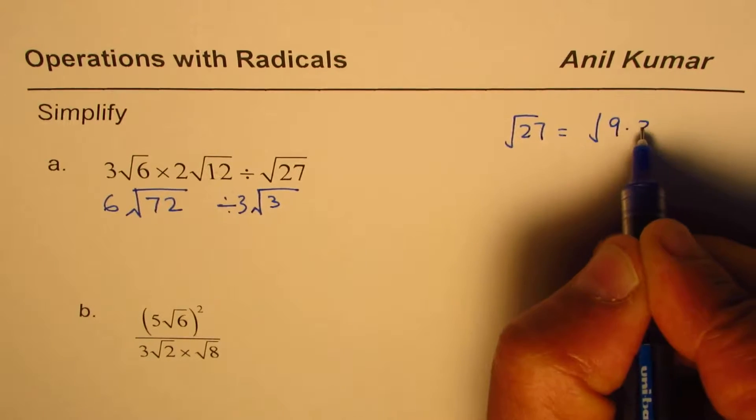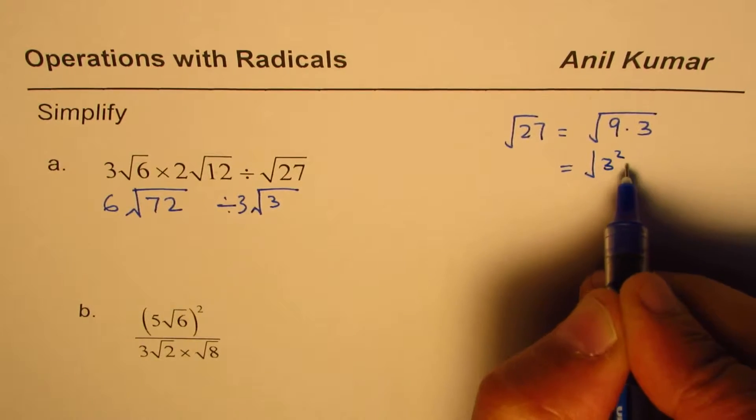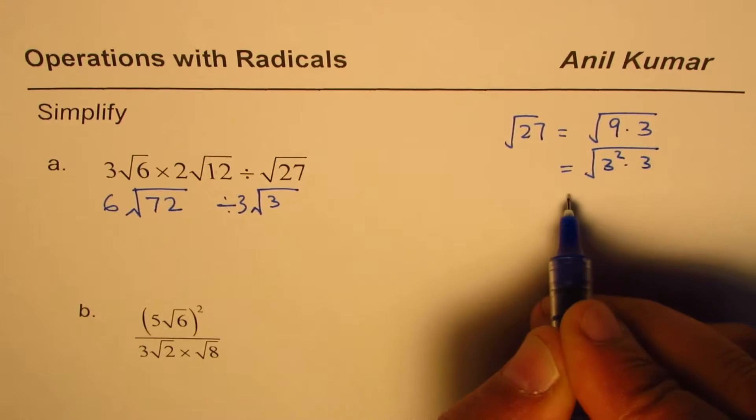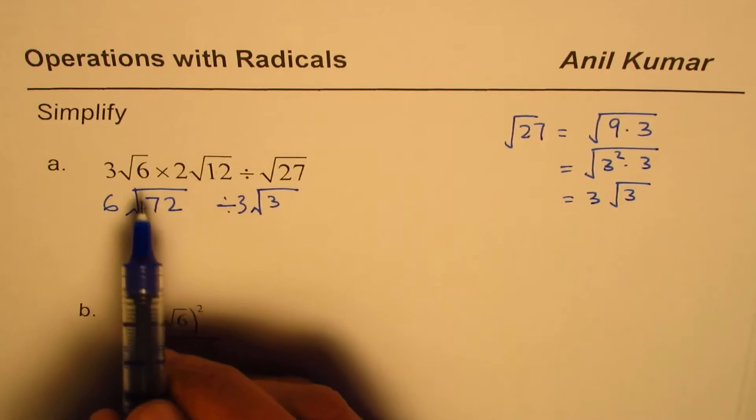3² times 3, so it could be written as 3√3. We could have actually done the same thing for 12 also. So we'll write like this. At present when you divide, the coefficients are divided by the coefficients.